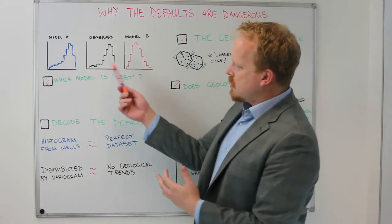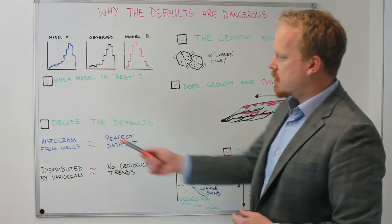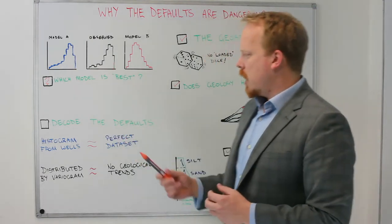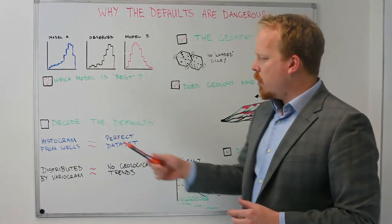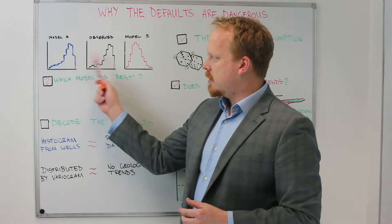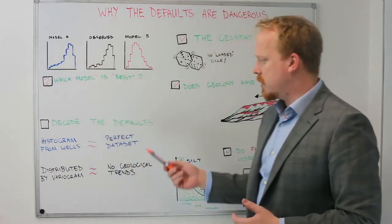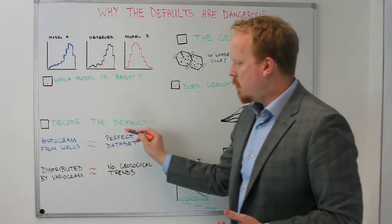So let's put that back into the context of how these models are created. Let's decode the defaults. If we're using a histogram that matches our well data, what we're really saying is that that well data set has sampled what exists in the geology perfectly.